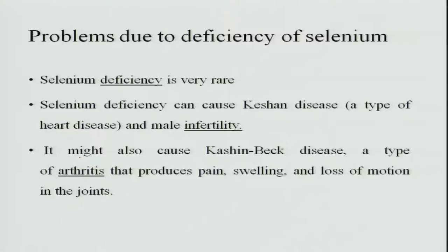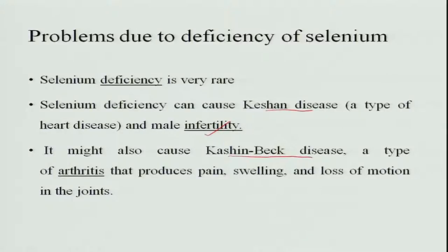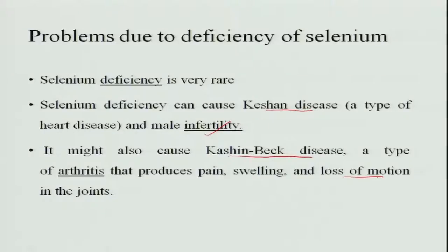Deficiency of selenium causes infertility in men, though deficiency is very rare because selenium is available in most foods. It can also cause Keshan's disease, a type of heart disease where the muscles of the heart are affected (cardiomyopathy), and Kashin-Beck disease, a type of arthritis causing pain, swelling, and loss of motion in bones and joints.